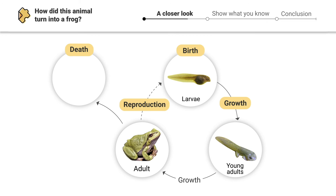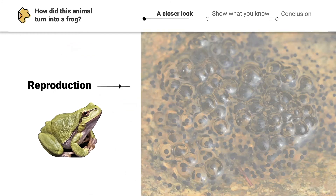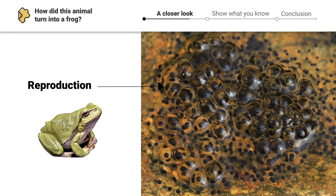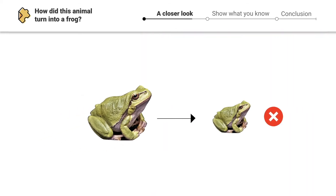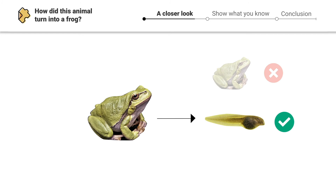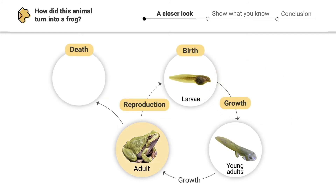When tadpoles complete metamorphosis, they look like this — they're just adult frogs. This frog can then reproduce by laying more soft, small eggs into the water. When the eggs hatch, you might think they're just going to look like frogs but smaller, but remember: when frogs hatch, they're tadpoles, so they actually look like this.